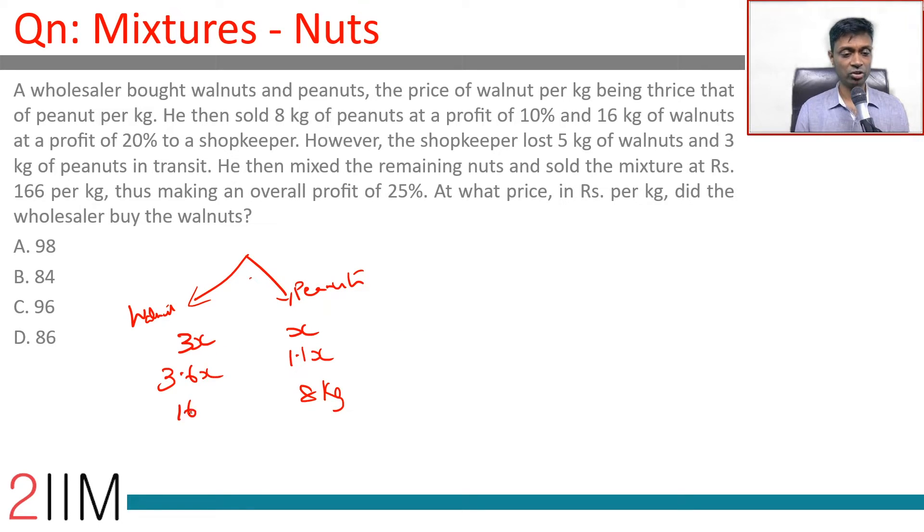However the shopkeeper lost 5 kg of walnuts and 3 kg of peanuts in transit. From 8 and 16, 5 of walnuts he loses and 3 of peanuts he loses. He then mixed the remaining nuts and